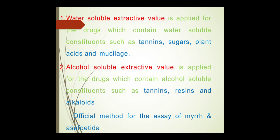Alcohol-soluble extractive value: alcohol is the ideal solvent for extraction of various chemicals like tannins and resins. This method is frequently used to determine the approximate resin content of the drug. It is the official method for assay of myrrh and asafoetida. Generally, 95% ethyl alcohol is used for determination of alcohol-soluble extractive. Example: aloes, not less than 10% w/w; Siam benzoin, not less than 90% w/w; Sumatra benzoin, 75% w/w.